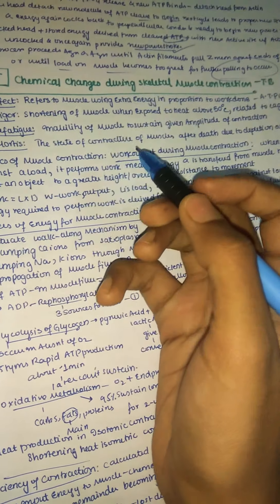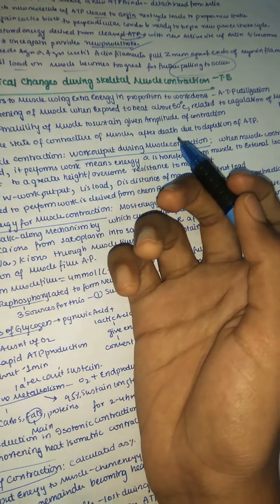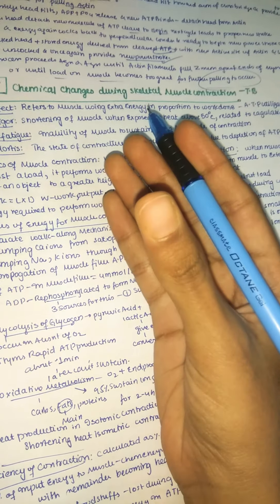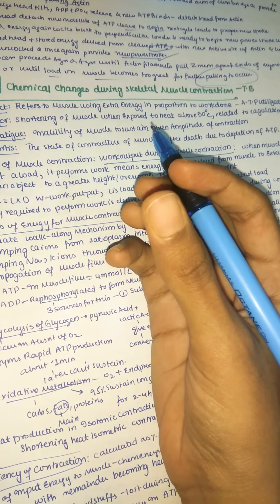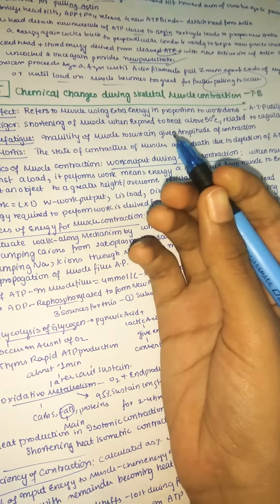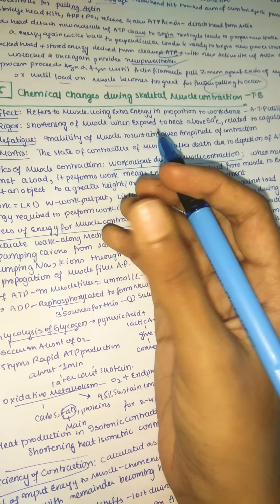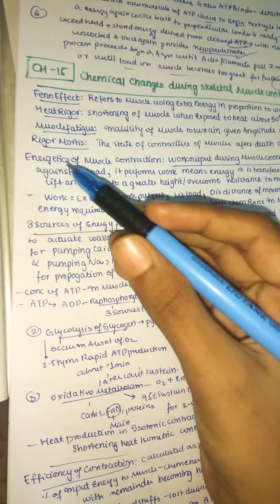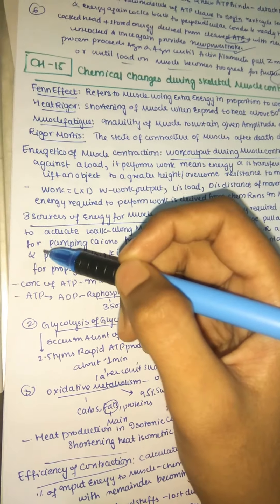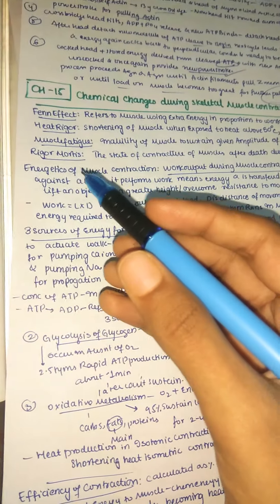Rigor mortis means the state of contracture of muscle after death due to depletion of ATP. After death, the contraction of muscle stops, but even to stop contraction we need ATP. Since there is no ATP after death, the muscles are stuck in the contracted state and become rigid — that is rigor mortis.